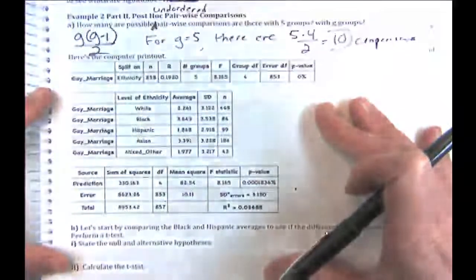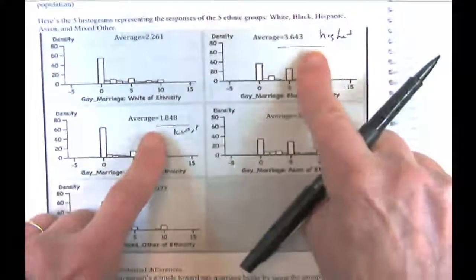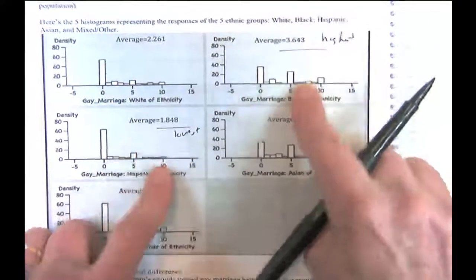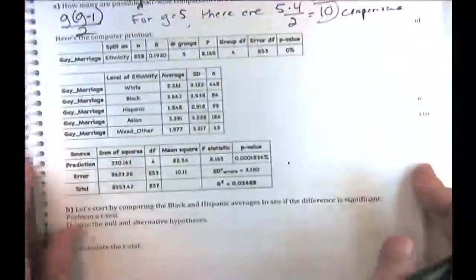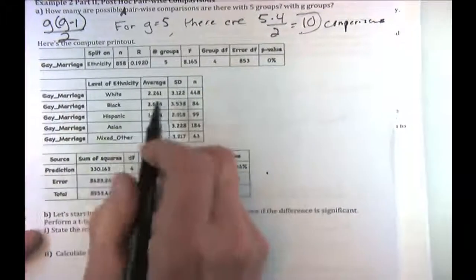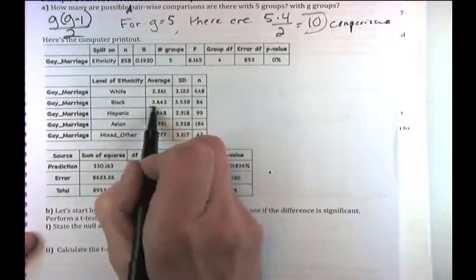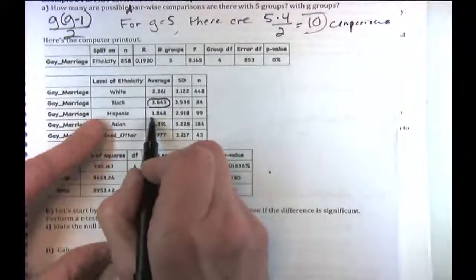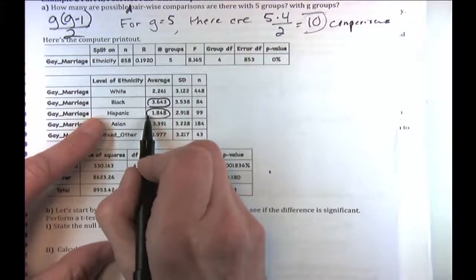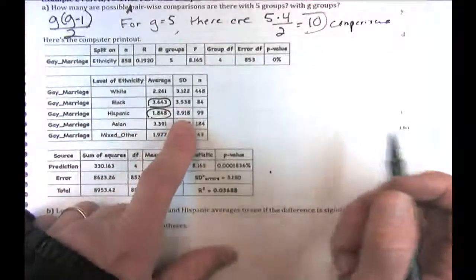First let's remember how to do the basic two-sample test. I'm going to cherry-pick the biggest difference — between Blacks (mean 3.643) and Hispanics (mean 1.848). How would I test that?